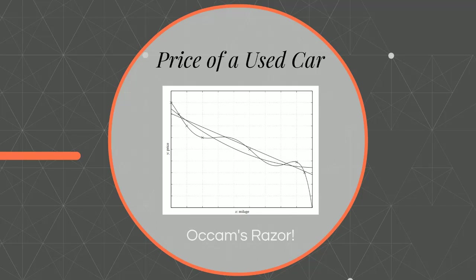Occam's razor says that the minimal amount of assumptions necessary is the best way to model the data. The learner is evaluated on its predictive power on a test set, not the training data — this goes back to generalization. We want a model that doesn't fit the data exactly, but captures the overall trend so that it can generalize to future predictions. Make sure the polynomial or linear model you output is not overly complex, but instead matches the complexity of the underlying data.